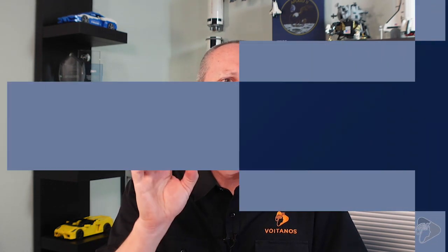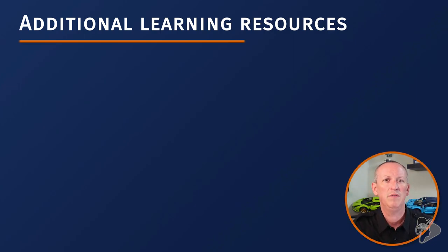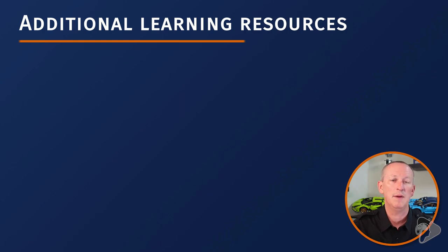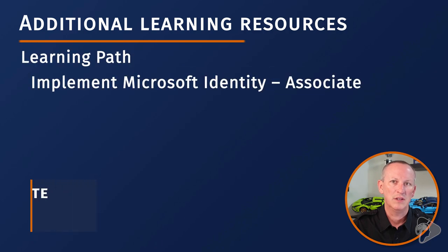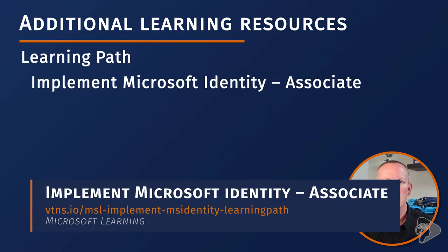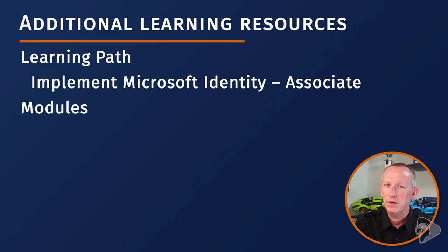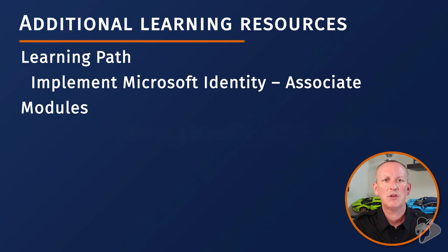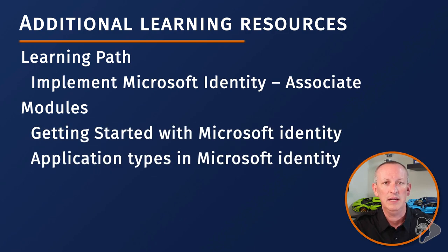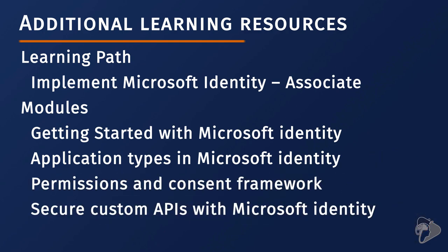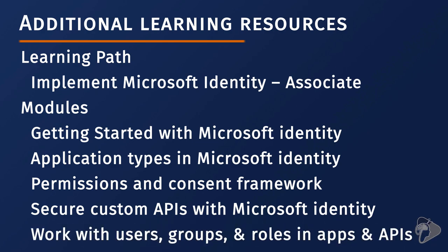On this slide, I want to quickly run through the Microsoft Learning resources. They have learning paths and modules — a learning path is a collection of modules strung together. The learning path for Microsoft Identity is called 'Implement Microsoft Identity Associate,' and it contains five modules: Getting Started with Microsoft Identity, Application Types in Microsoft Identity, Permissions and Consent Framework, Secure Custom APIs with Microsoft Identity, and Work with Users, Groups, and Roles in Custom Apps and APIs. All of these modules contain hands-on labs. Microsoft Identity also contains a ton of documentation, including the homepage titled 'What is the Microsoft Identity Platform' and the Glossary of Terms.